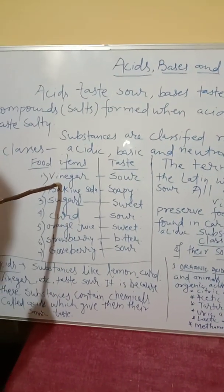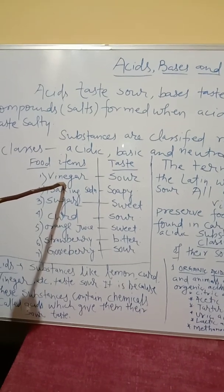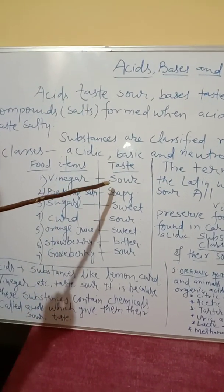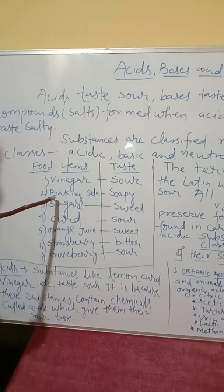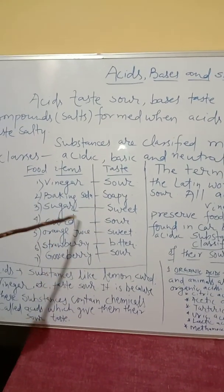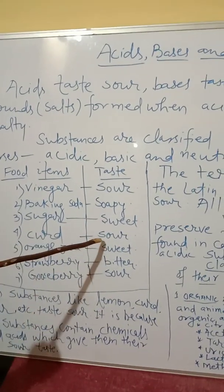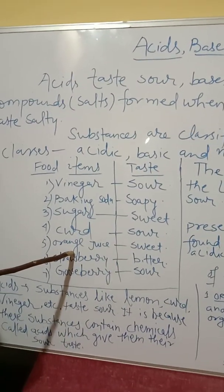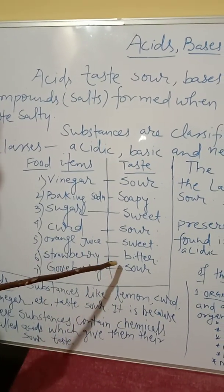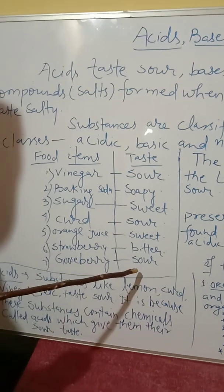In your Activity 5.1, these food items are given. Vinegar — what is the taste? It is sour in taste. Baking soda — soapy in taste. Sugar — sweet in taste. Curd — sour in taste. Orange juice — sweet in taste. Strawberry — bitter in taste. Gooseberry — sour in taste.